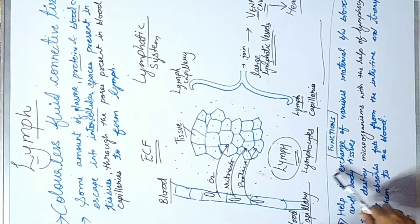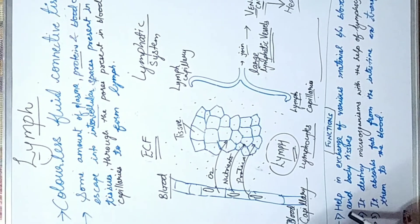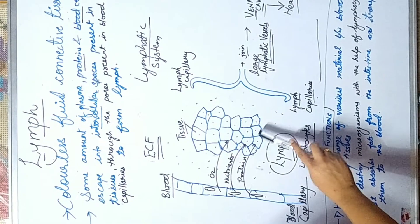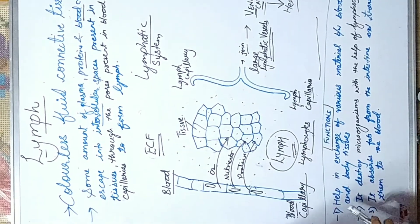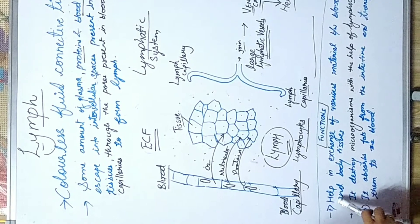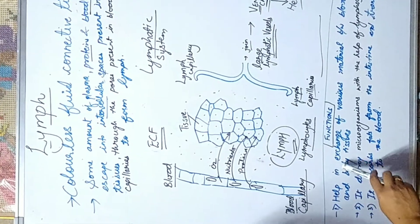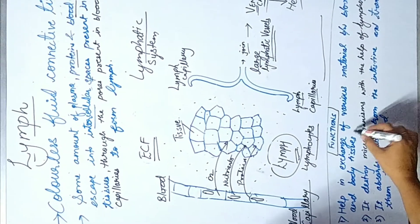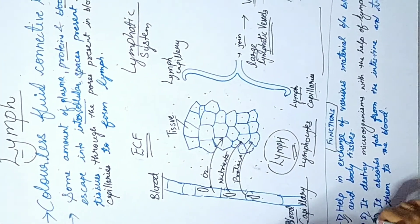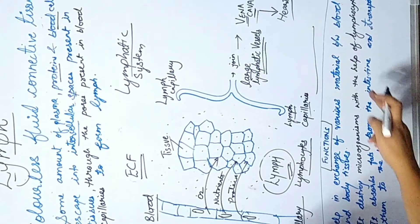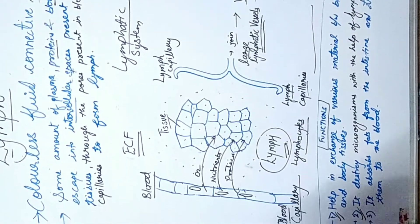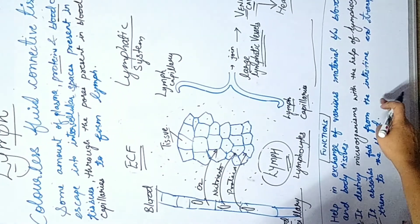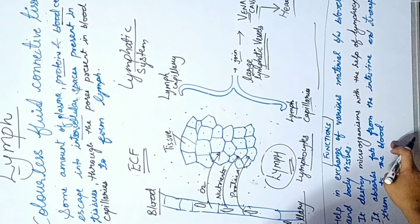The functions of lymph: First, it acts as a middleman between tissues and blood, helping in the exchange of various materials between blood and body tissues. Second, it destroys microorganisms with the help of lymphocytes present in the lymph. Third, it absorbs fat from the intestine and transports it to the blood.